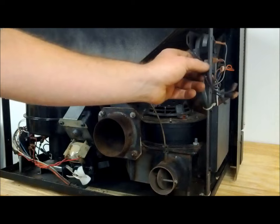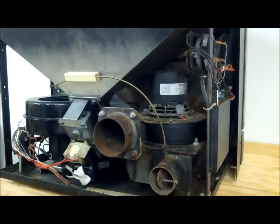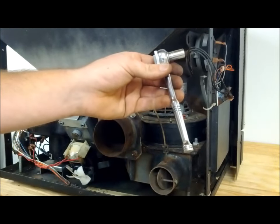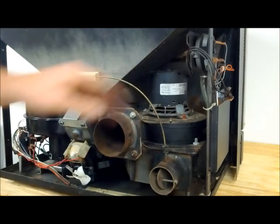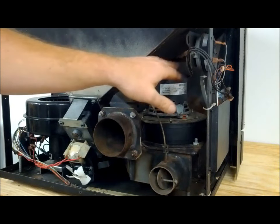Now that the wires are properly labeled and disconnected, take a quarter inch ratchet and an 11/32 socket and remove the six nuts that hold the exhaust fan in place.